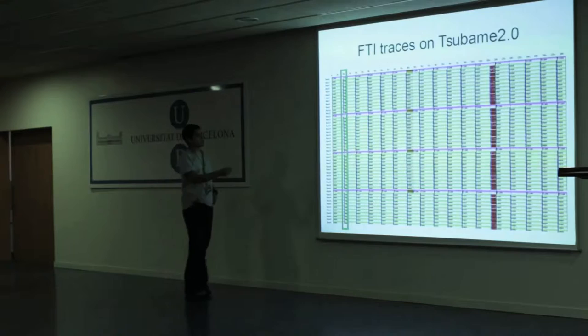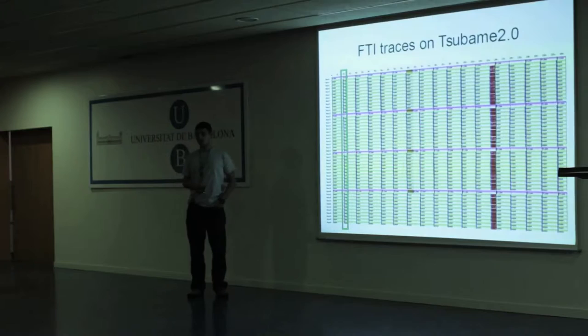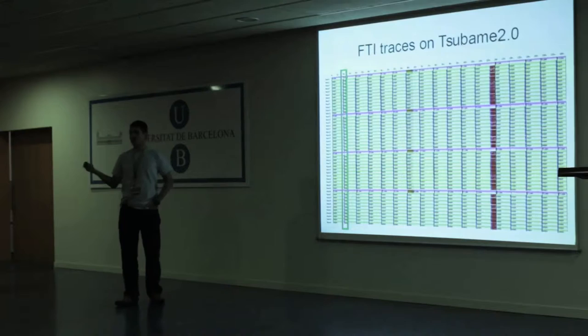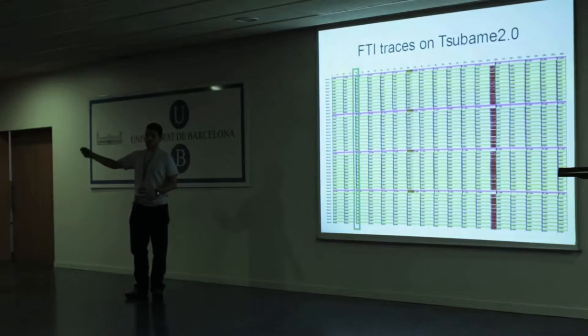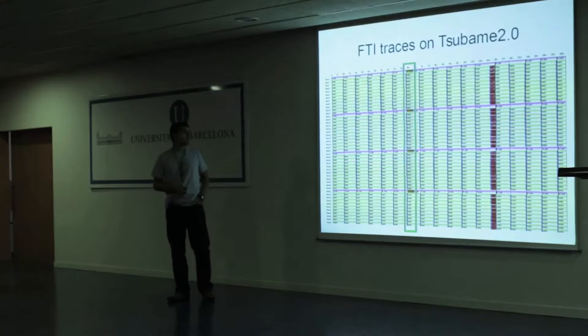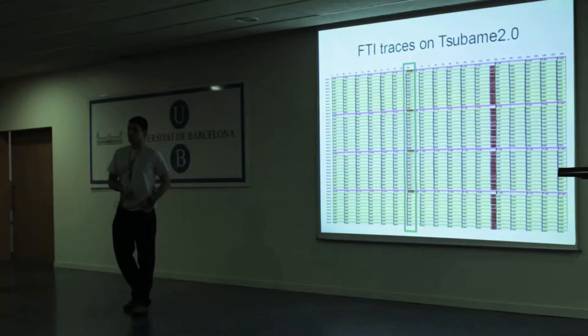You can see checkpoints: the small blue line is a local checkpoint — level one — where you just write data locally, so you can tolerate transient failures but not node failures. Level two writes locally and then copies to a neighbor node, so if one node goes down you can retrieve your data. Level three uses Reed-Solomon encoding to create encoded checkpoints, allowing you to tolerate multiple nodes or even a rack going down if data is distributed correctly.